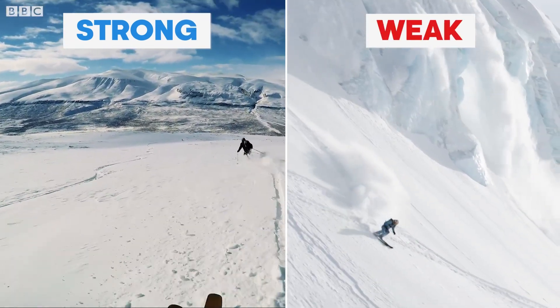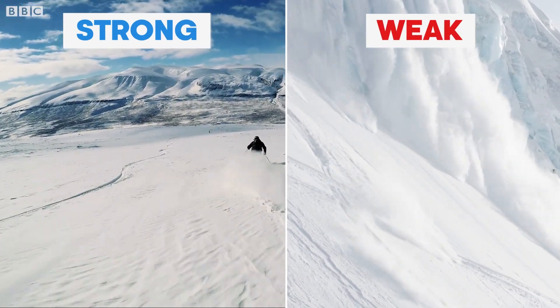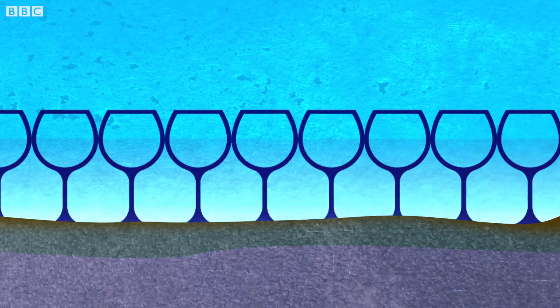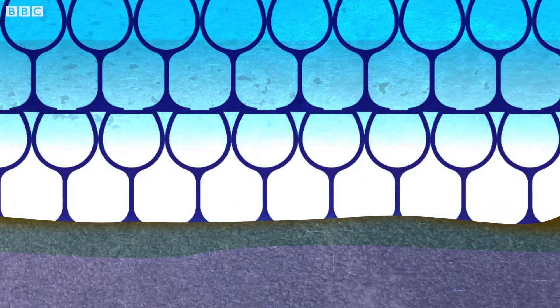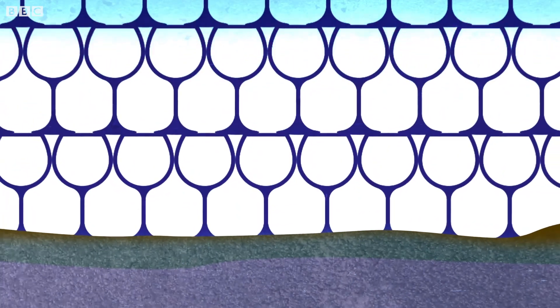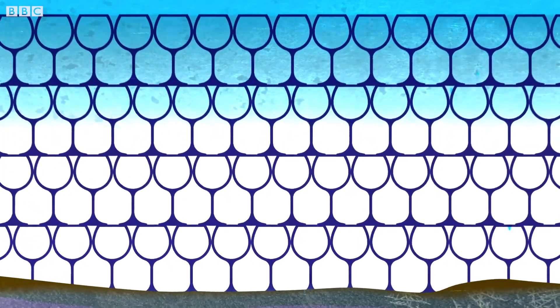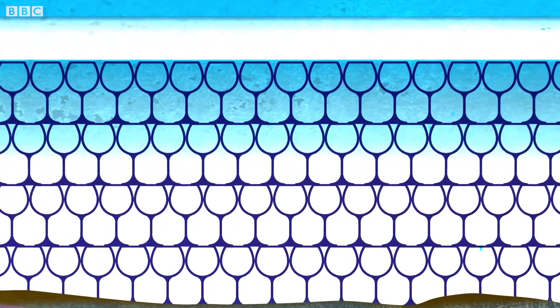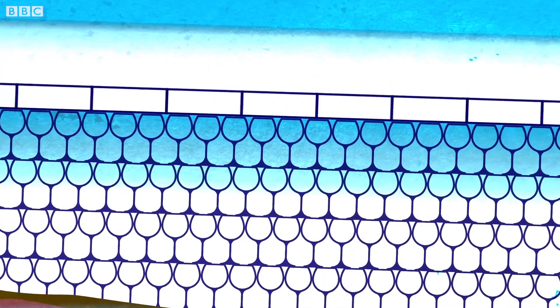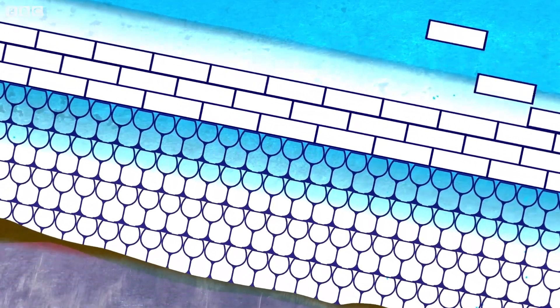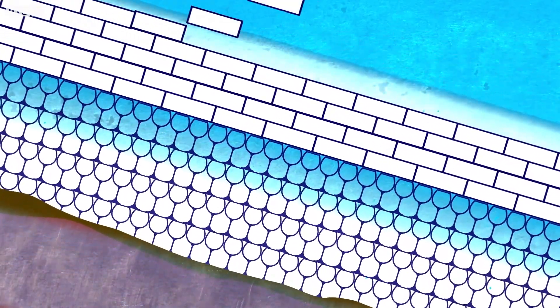The most dangerous avalanches have this weak layer. One way to imagine it is like a row of wine glasses all stacked on top of each other. They might be relatively stable by themselves, but as the layer of snow above gets thicker and thicker — as dense as a row of bricks being stacked on top of the glass — eventually that weak layer will break. This is when we get the avalanche.